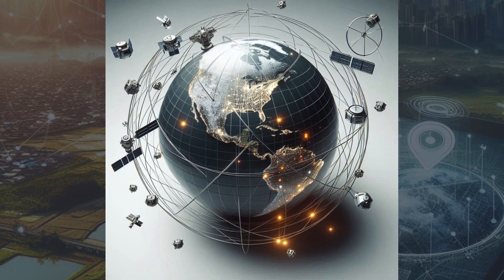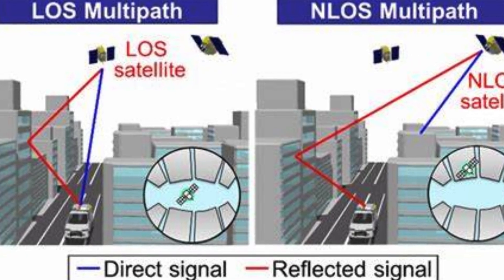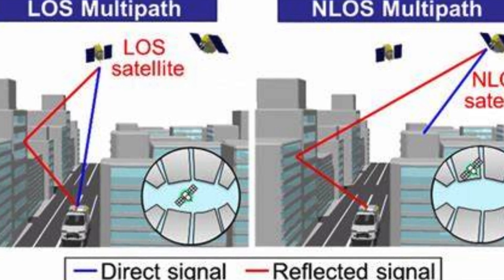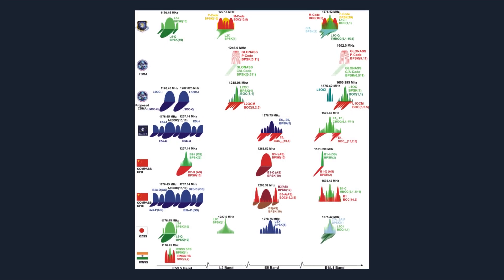While GNSS is powerful, it's not without its challenges. Signal interference, multipath errors where signals bounce off buildings or other surfaces, and obstructions like mountains or urban canyons can affect accuracy.